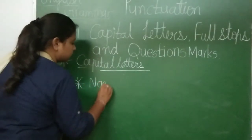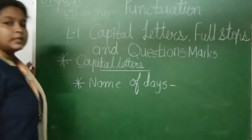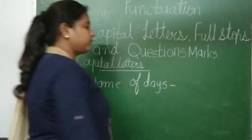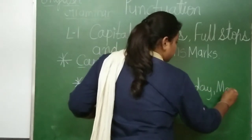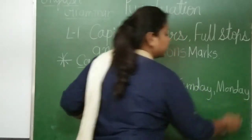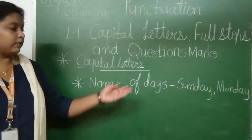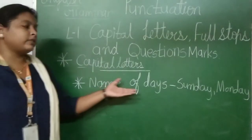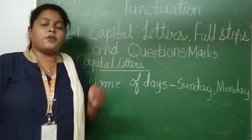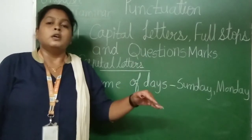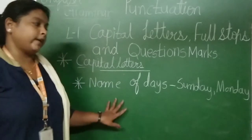Name of days — the days of the week. Sunday, Monday, Tuesday, Wednesday, Thursday, Friday, Saturday. These days you write with a capital letter. Name of days can be written in capitals wherever they appear — whether at the starting of the sentence, in the middle, or at the end of the sentence. You have to write these with capital letters.